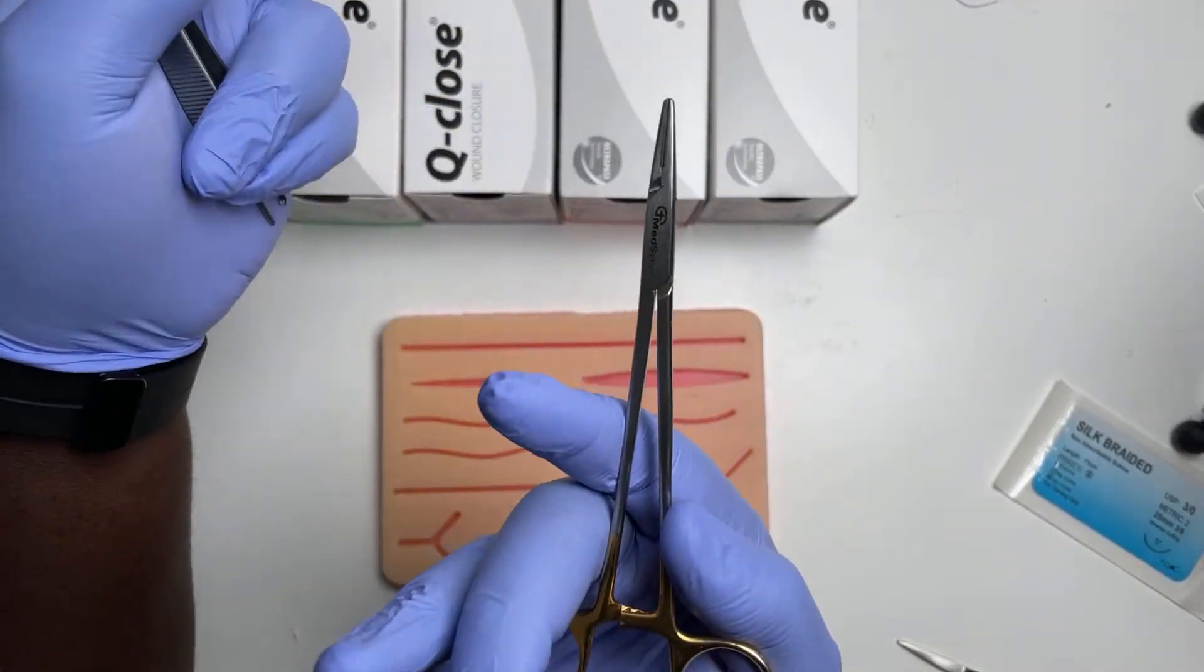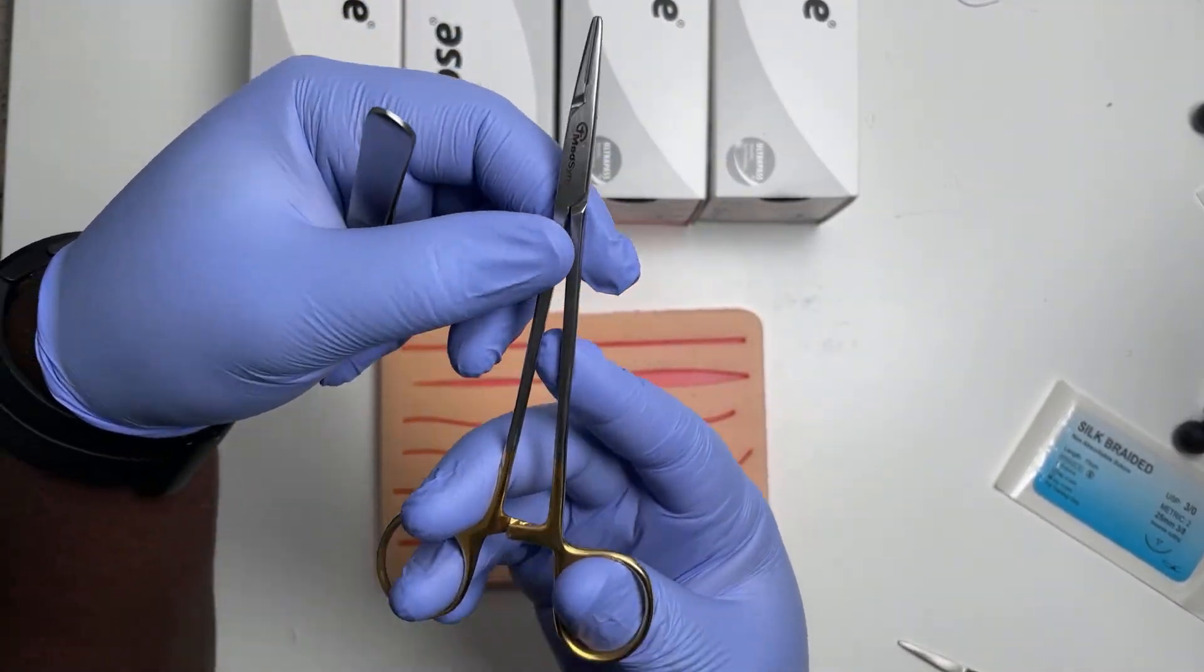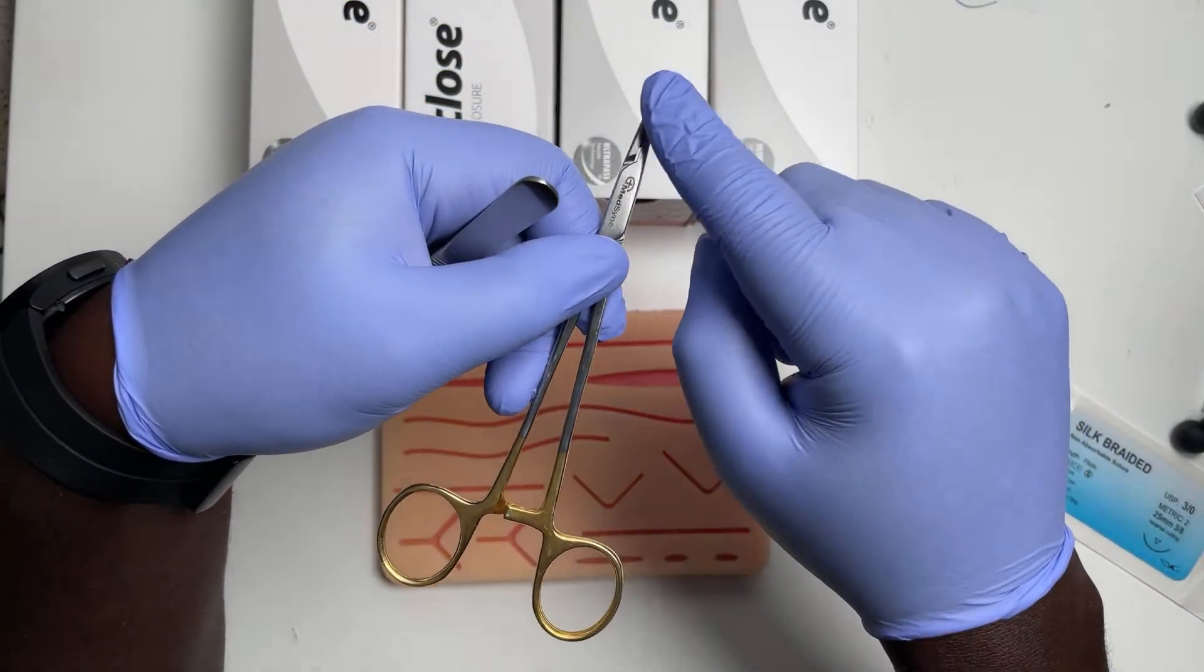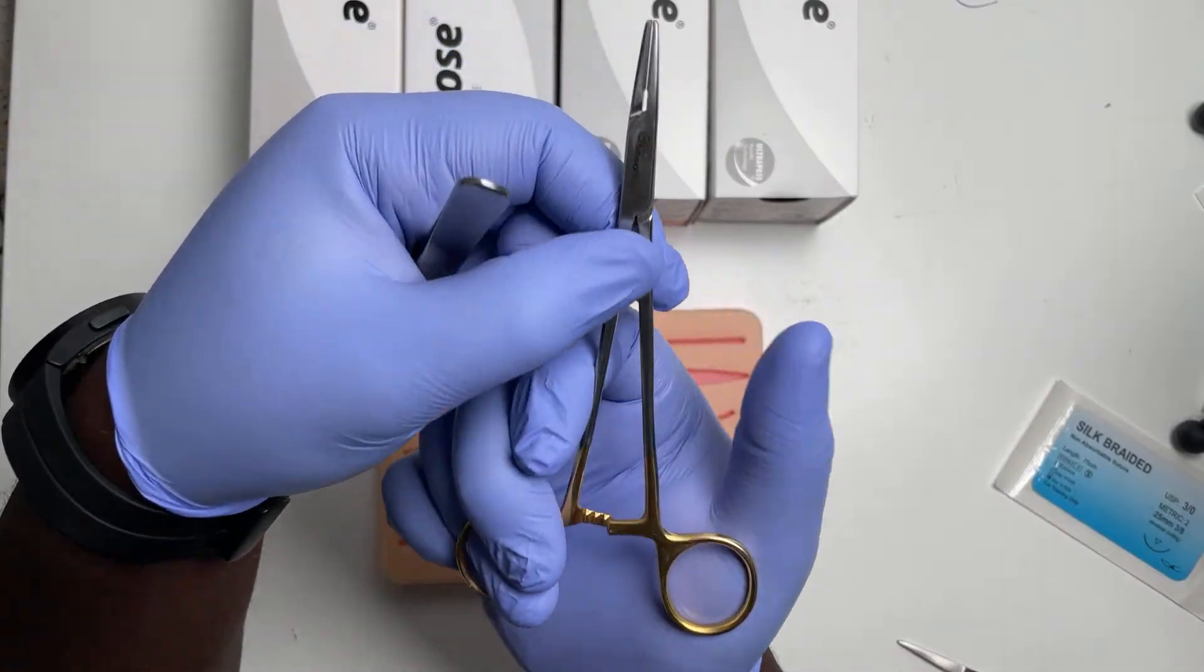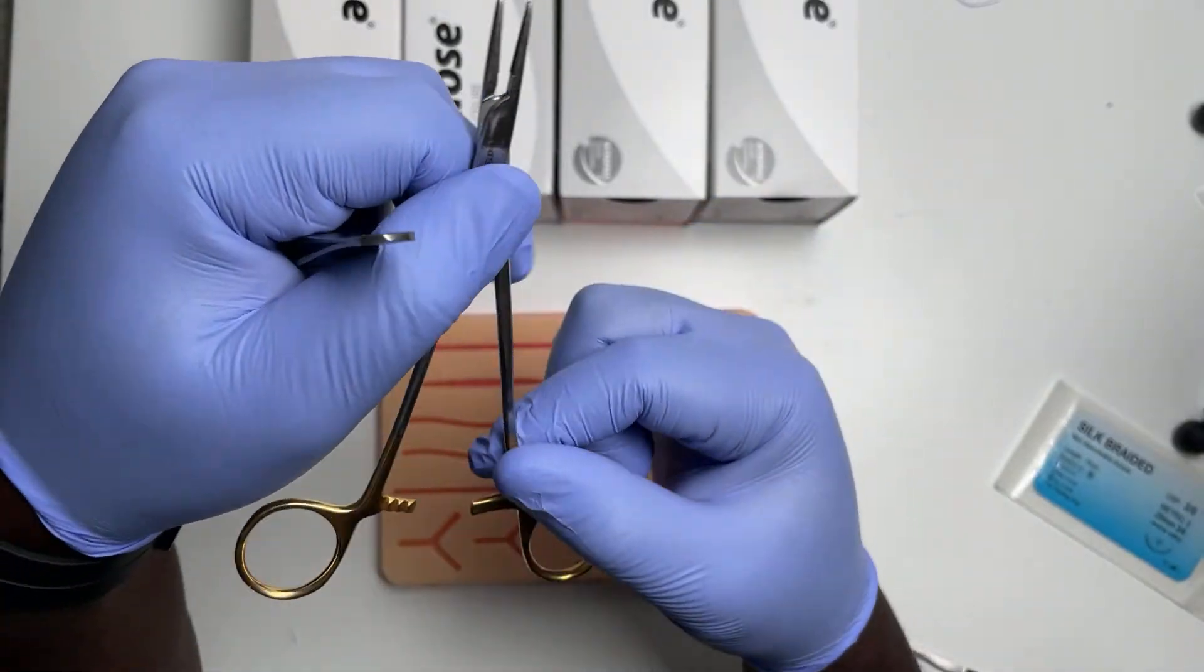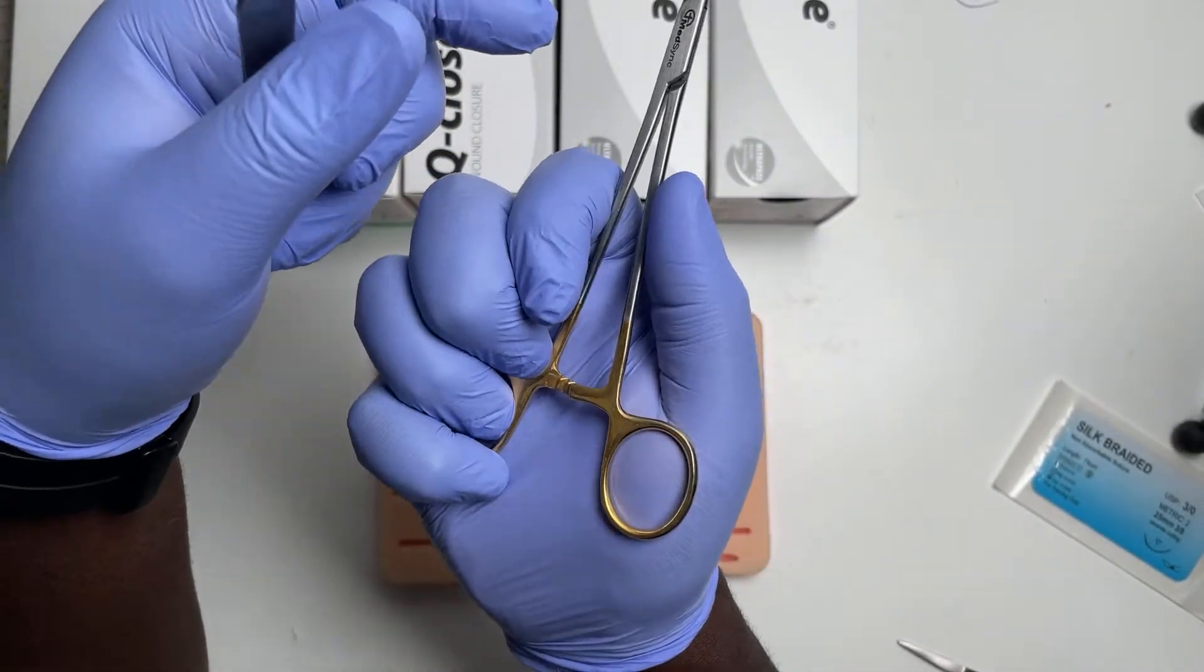It works really well when you're using a bigger needle holder. This is just for skin, so it's a small tungsten carbide needle holder. Tungsten carbide, the gold means it's got better grip. And you can see that because it's got the cross hatching at the teeth.